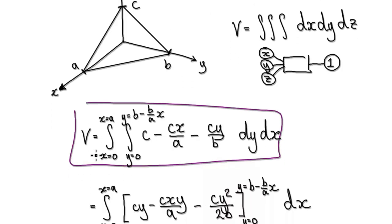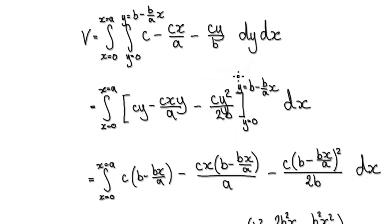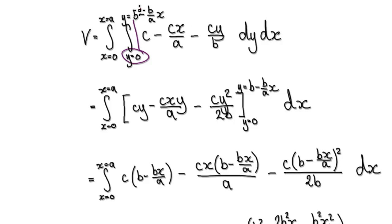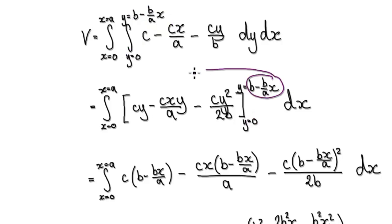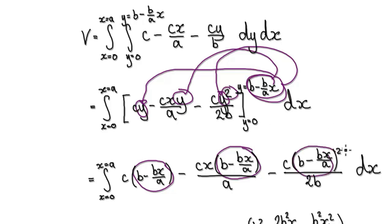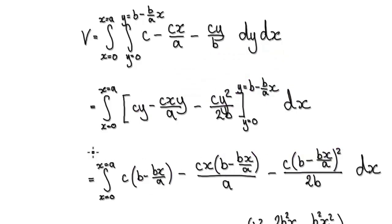Now it's just a matter of integrating with respect to y. Integrating this gives cy; integrating the next term gives this; and the next gives this. We're integrating from y equals zero to this upper limit. Substituting y equals zero to that expression, putting the limit into each term gives us the result. Here we have y squared, so that takes us to this expression here.